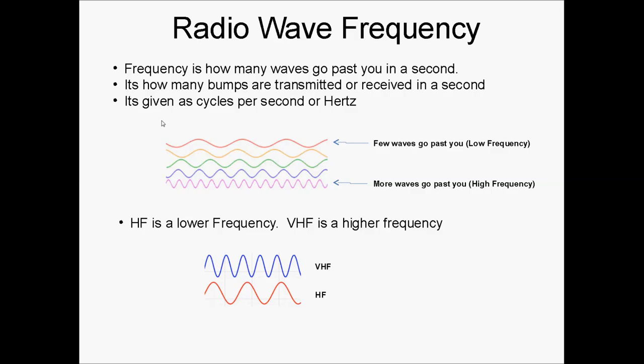Radio waves are measured in frequency — the number of waves that travel past you in one second. A high frequency wave will have more bumps. HF is a lower frequency than VHF, meaning VHF has more bumps than HF.